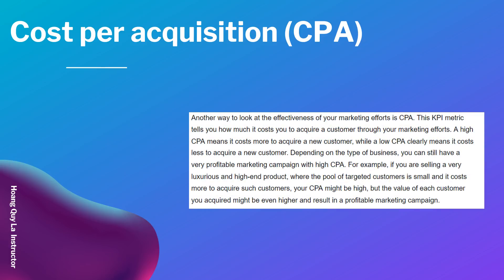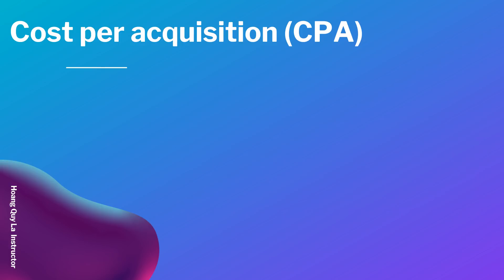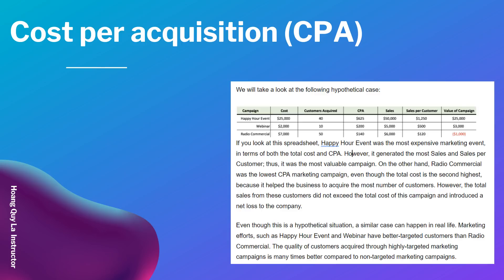Now let's talk about cost per acquisition, CPA. Another way to look at the effectiveness of your marketing efforts is CPA. This KPI metric tells how much it costs to acquire a customer through your marketing effort. A high CPA means it costs more to acquire a new customer, while a low CPA clearly means it costs less to acquire a new customer. Depending on the type of business, you can still have very profitable marketing campaigns with a high CPA — for example, if you are selling a very luxurious and high-end product where the pool of targeted customers is small.